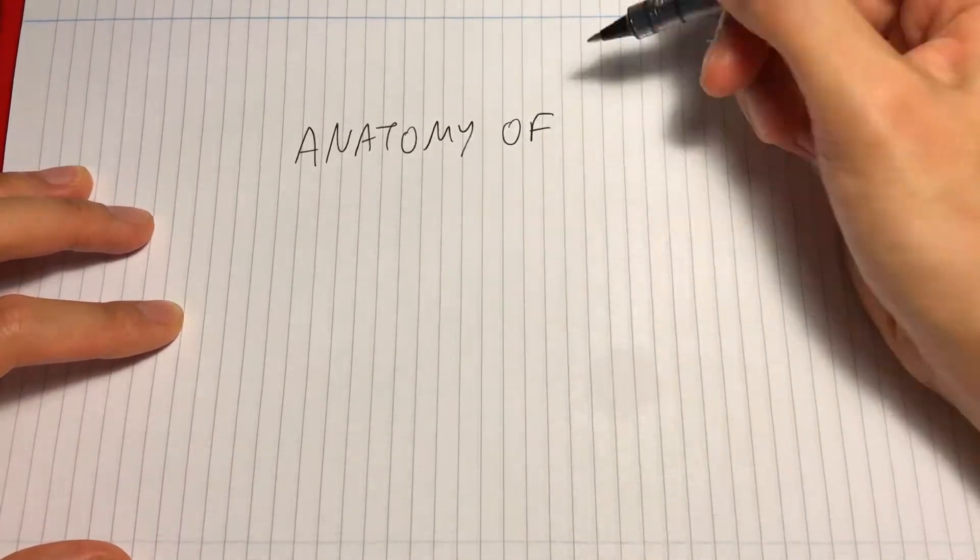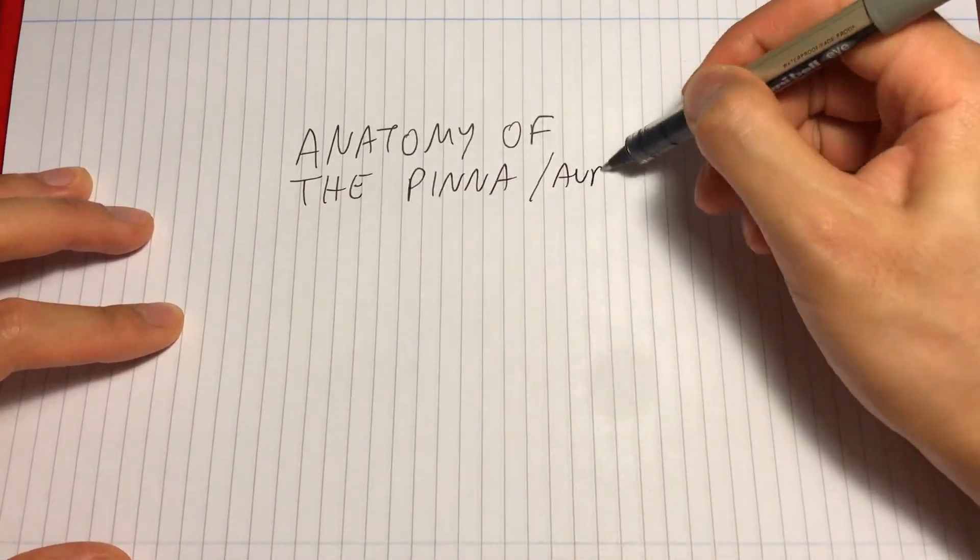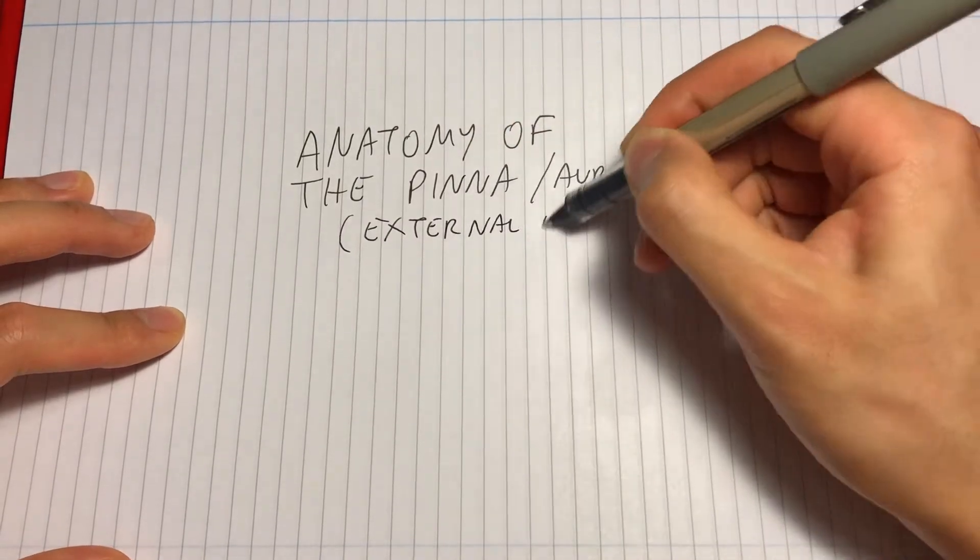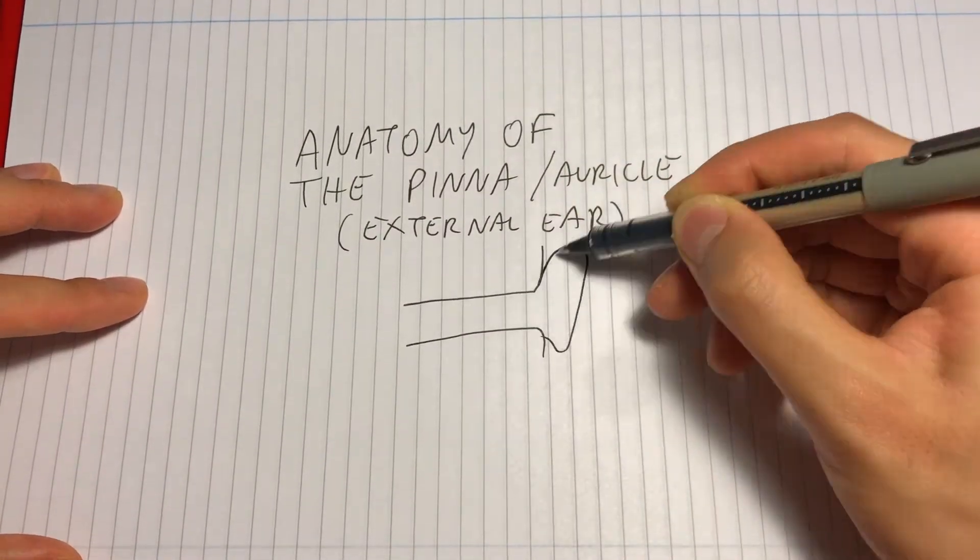Hi YouTube, welcome to ENT Bytes. Today's ENT Byte is about the pinna, also known as the auricle, which is part of the external ear.